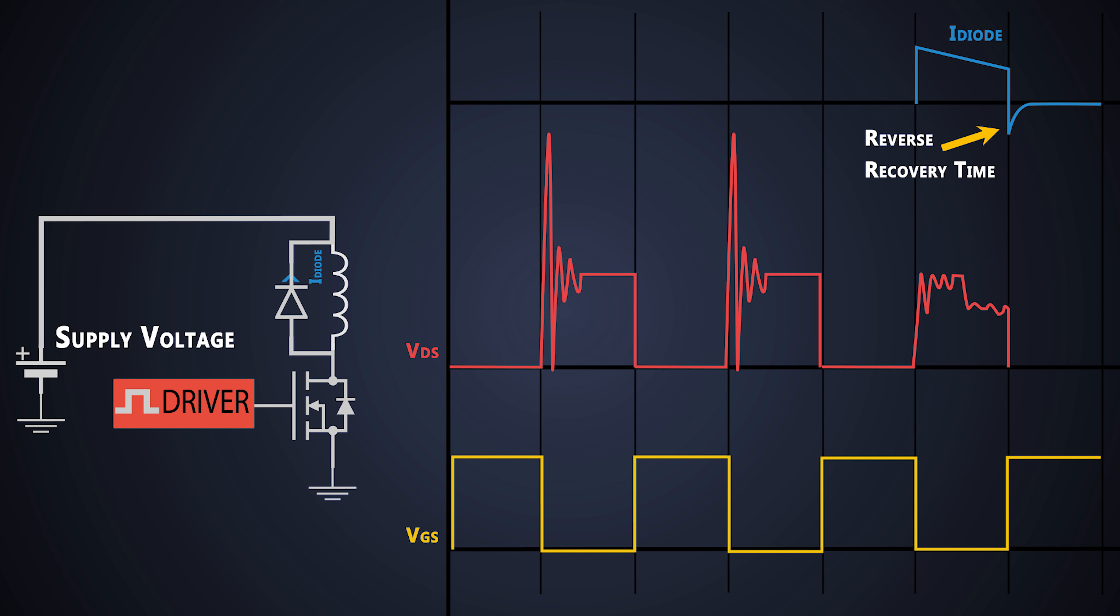If we see the graph of the forward current of the diode, initially it is in positive x-axis region when the MOSFET is turned off. Now when the MOSFET is on and the diode is off, still a small amount of current flows in a negative direction, which comes back to normal stage after some time. And if we see the waveform of this diode in a DSO, it looks like this. And this is the reverse recovery time.